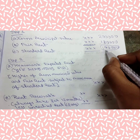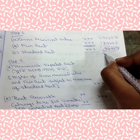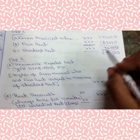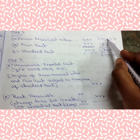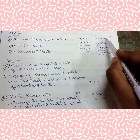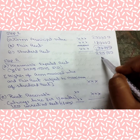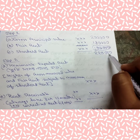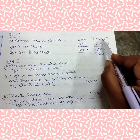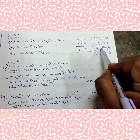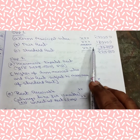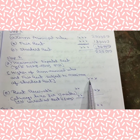Suppose standard rent is 2 lakh 20,000. Gross municipal value is still higher between GMV and fair rent. Now it does not exceed the standard rent, because standard rent is 2 lakh 20,000. In that case, reasonable expected rent will be the gross municipal value of 2 lakhs. I have given two examples for step 2.